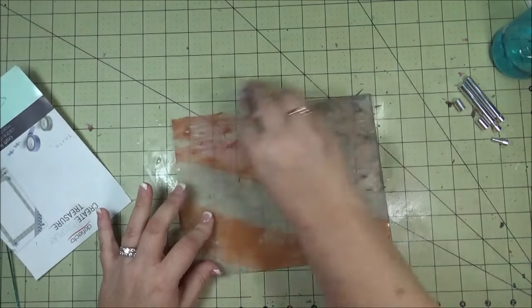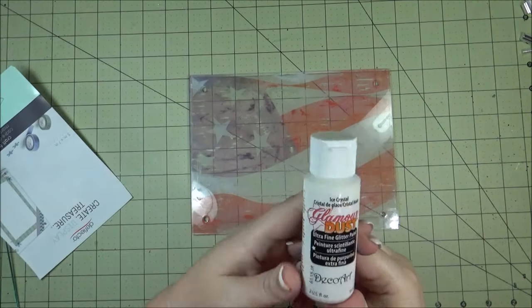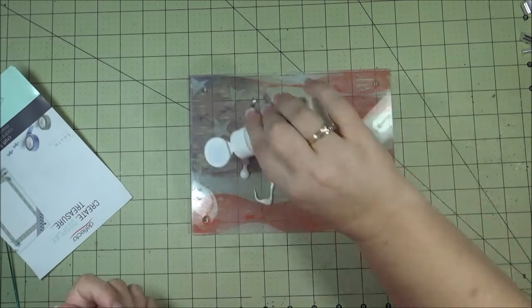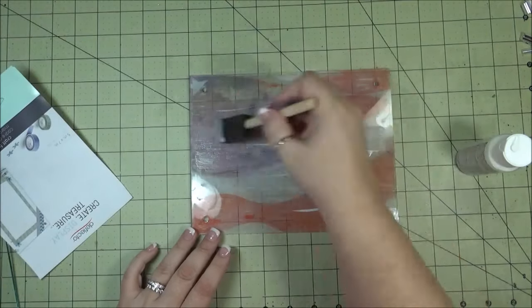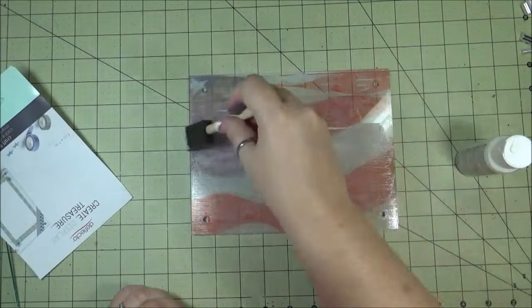Once I was happy with that, I took some Glamour Dust from DecoArt. This is the Ice Crystal, and I painted it on there. It has a really pretty ultra-fine glitter in it.